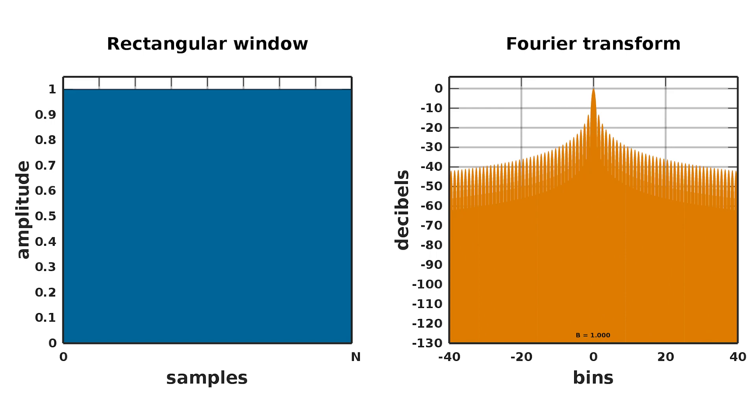This is W in the frequency domain — basically a sync function in the frequency domain, not in the time domain. We can divide it into two sections: the main lobe and the various side lobes. The size of the transition band of G is related to the width of the main lobe of W. The wider the main lobe, the longer the transition band, and the narrower the main lobe, the shorter the transition band. We want as small a transition band as possible in our ideal case.